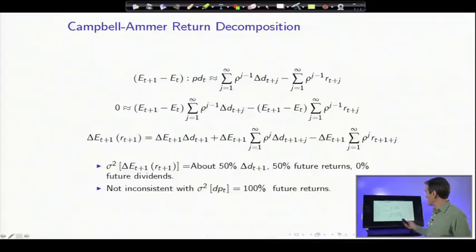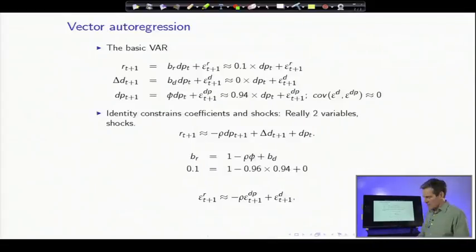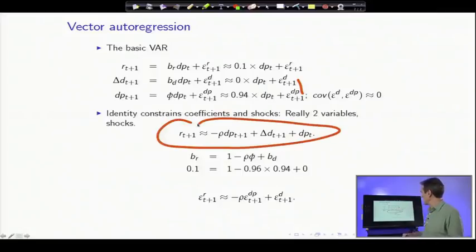So let's look at our simple VAR. Here it is again, the simple VAR, and I repeated the numbers for your memory: roughly 0.10 and 0.94, with a covariance between those two shocks of about 0. Now once again, our identities tell us a lot about these three things, and particularly the return identity. Return is related to dividend growth, dividend yield, and dividend price ratio. That tells you we really only have two separate variables and two separate shocks. Once I tell you any two of return, dividend growth, and dividend price ratio, I can tell you what the third one is from that equation.